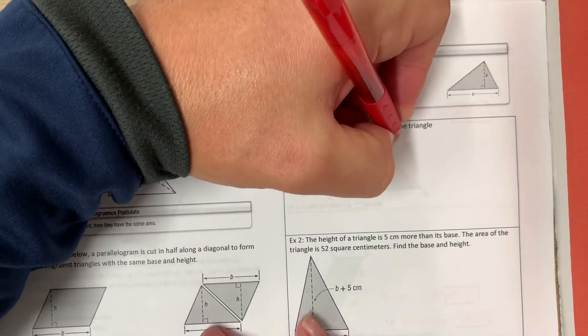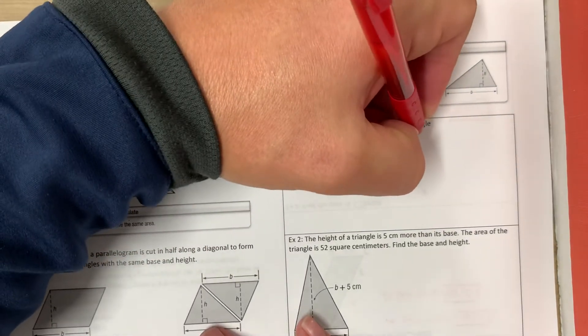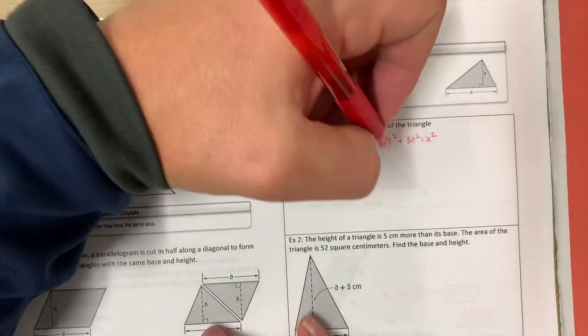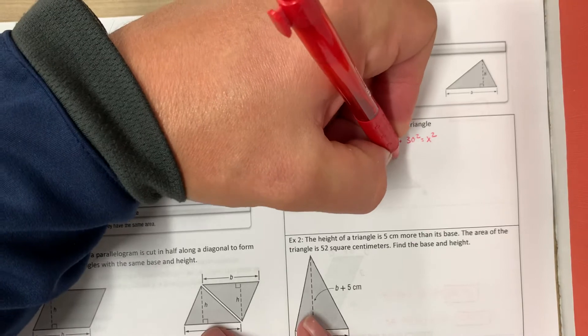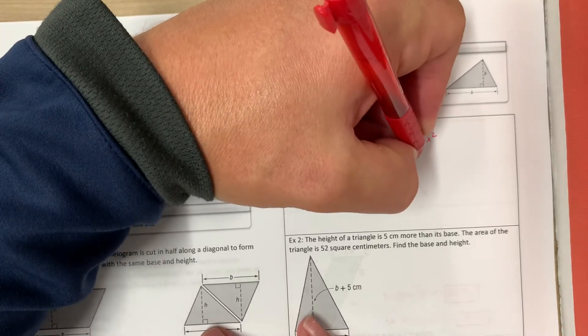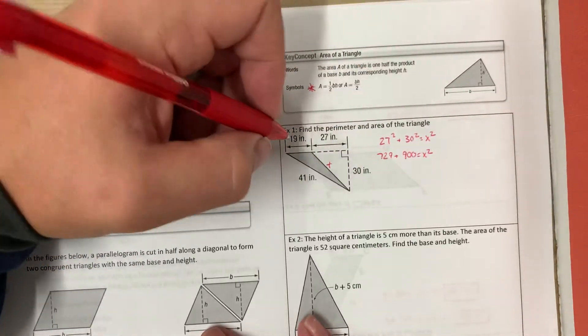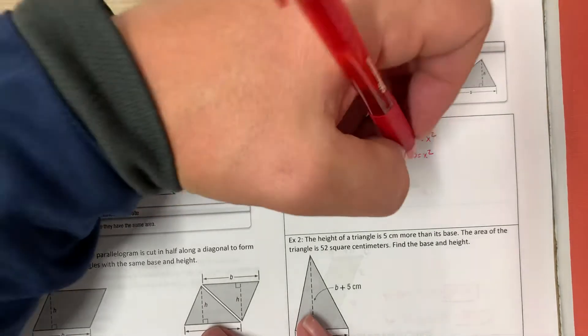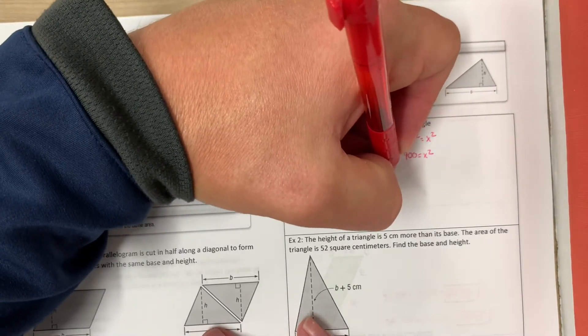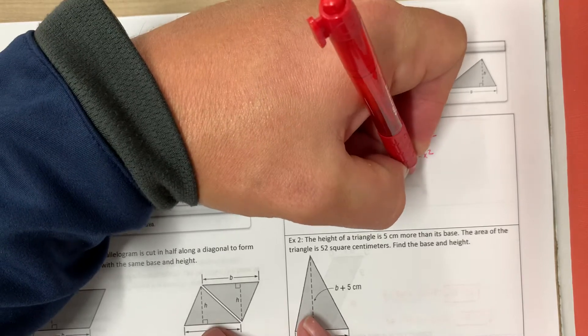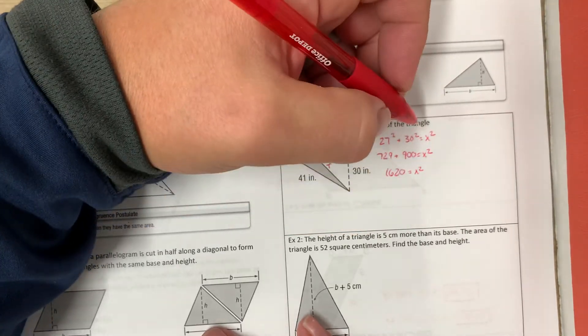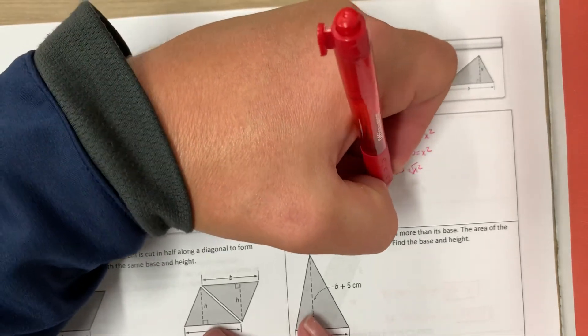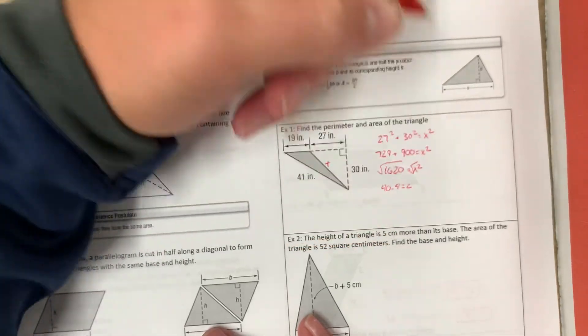So we have 27 squared plus 30 squared equals X squared. 27 squared is 729, 30 squared is 900 equals X squared. 729 plus 900 is 1620 equals X squared. We'd square root both sides, so we get 40.4 equals C.